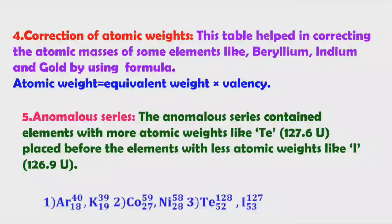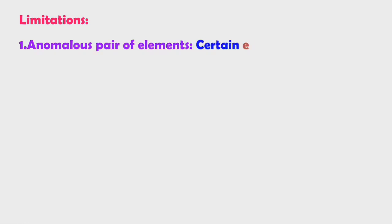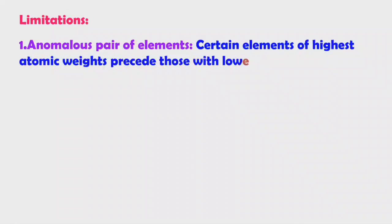Remember these three anomalous pairs — they are very important. Now for the limitations or drawbacks: the first is anomalous pairs, where certain elements of higher atomic weight precede those with lower atomic weight. There are three such anomalous pairs.